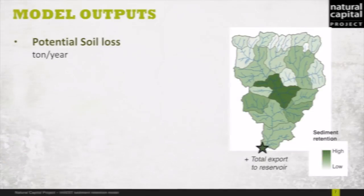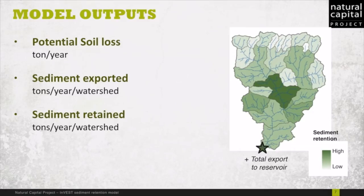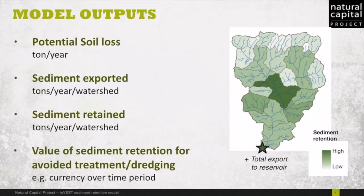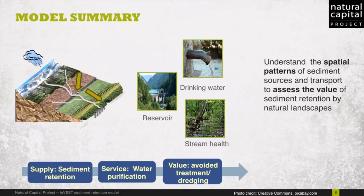With these inputs, the model will produce the potential soil loss, or the amount of eroded material in the landscape, the sediment exported and retained on each sub-watershed, and the value of sediment retention in terms of avoided treatment or dredging. As a summary, the sediment retention computed by the biophysical part of the model can inform the service and benefits provided by different parts of the landscape, helping understand how much sediment is retained and where, which can be compared with other ecosystem services to inform the decision process.